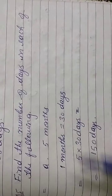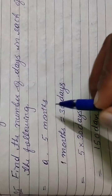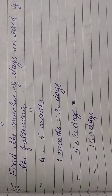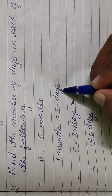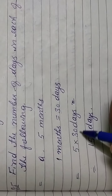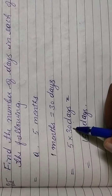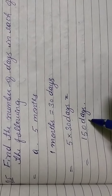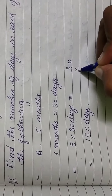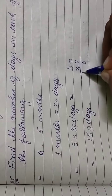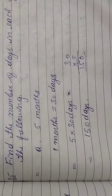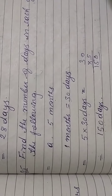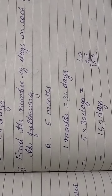Question number 5: Find the number of days in each of the following — months to days. I have told you: normally we take 1 month = 30 days. So 5 × 30 = 150 days. Keep attention: weeks, how many days — only this much you have to remember.